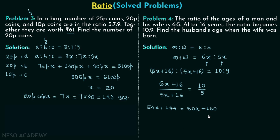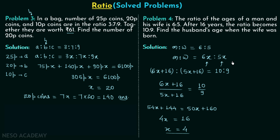We subtract 50X from both sides and subtract 144 from both sides. This gives us 4X on the left-hand side and 16 on the right-hand side. Dividing both sides by 4, we get X = 4.